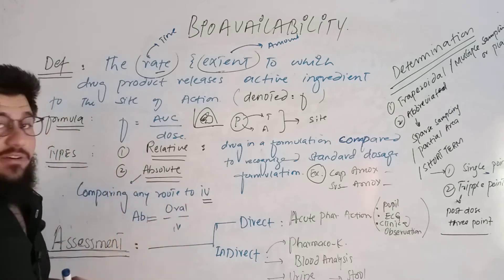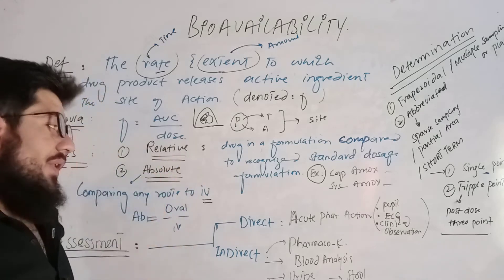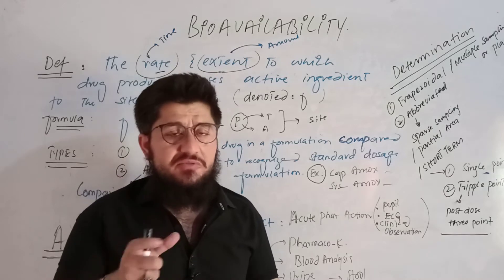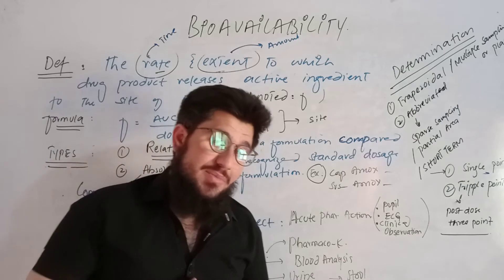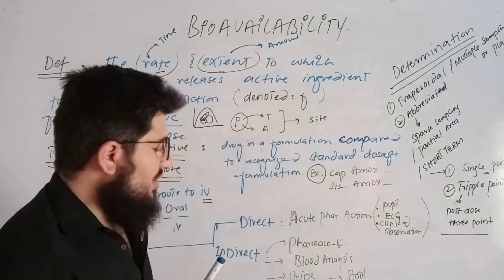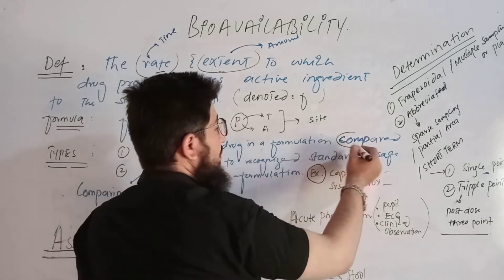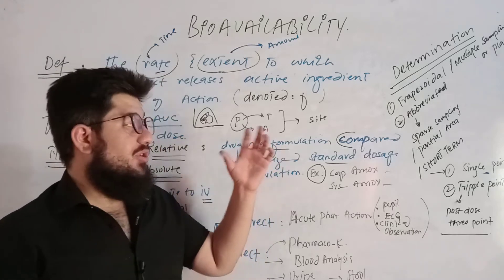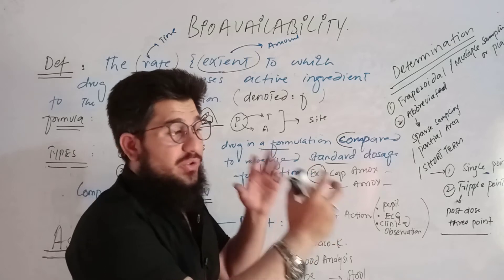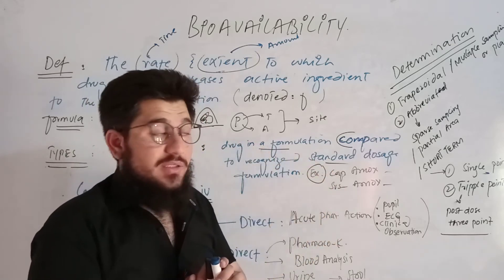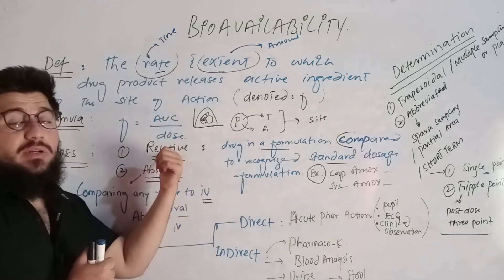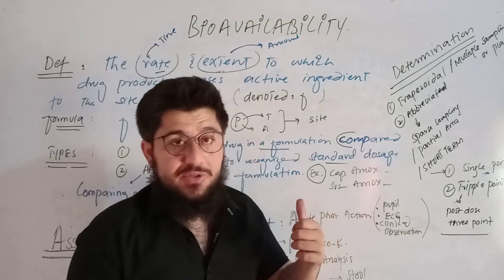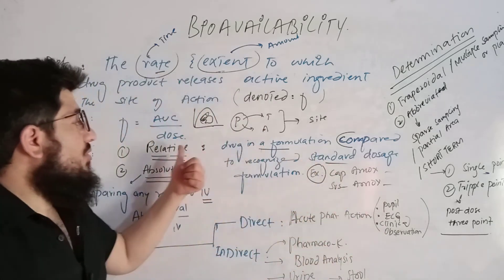We have two types of bioavailability: relative and absolute. Relative bioavailability refers to a drug in one formulation compared to a recognized standard dosage formulation. We compare one formulation with a recognized standard formulation. For example, capsule amoxicillin compared to suspension amoxicillin — both are amoxicillin, but one is a capsule and the other is a suspension. Comparing these two formulations gives us relative bioavailability.